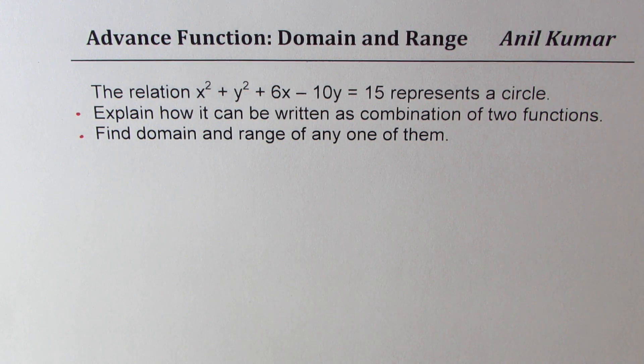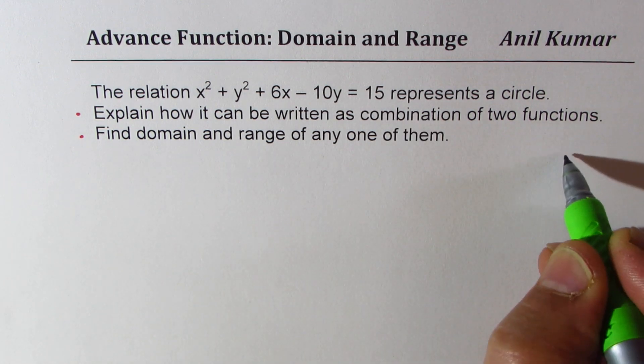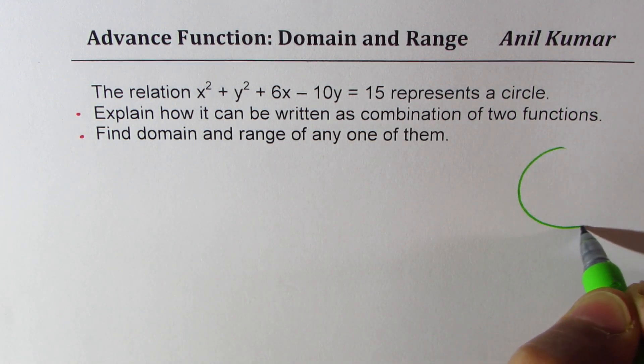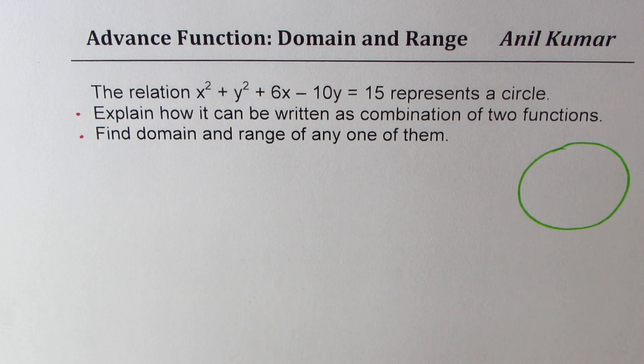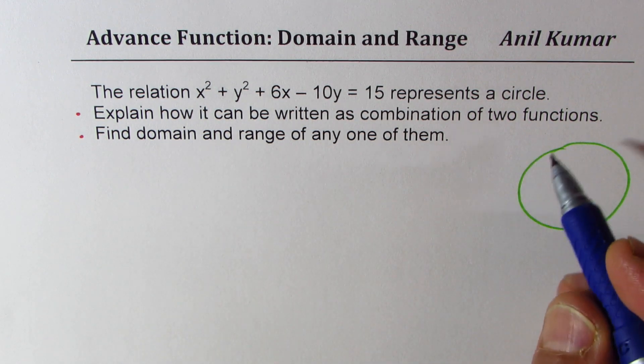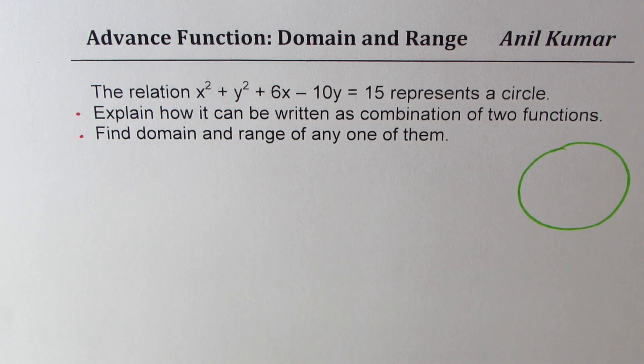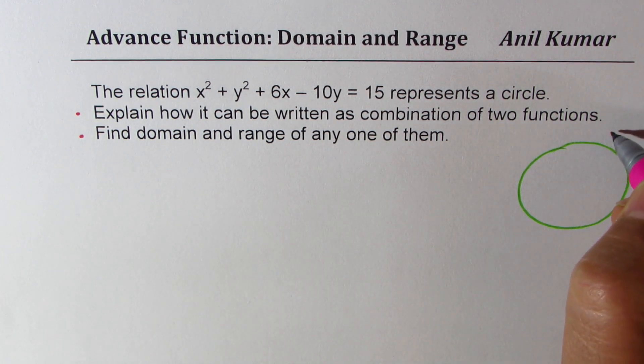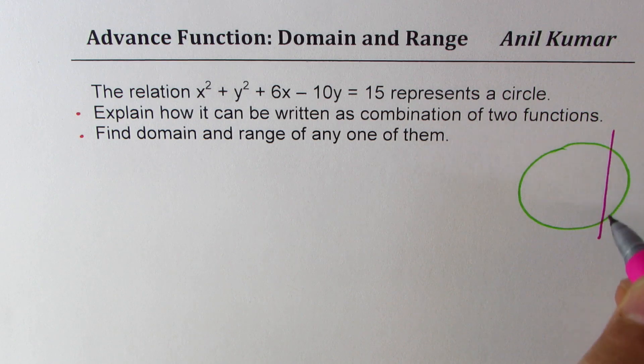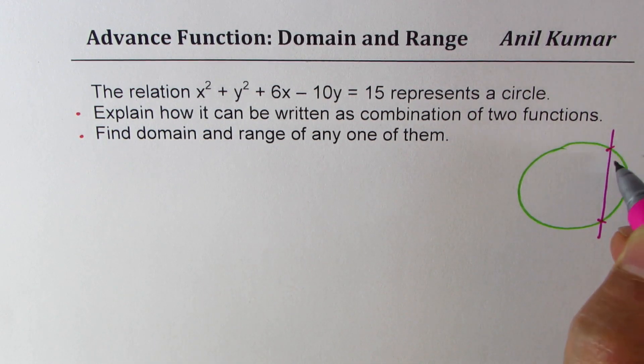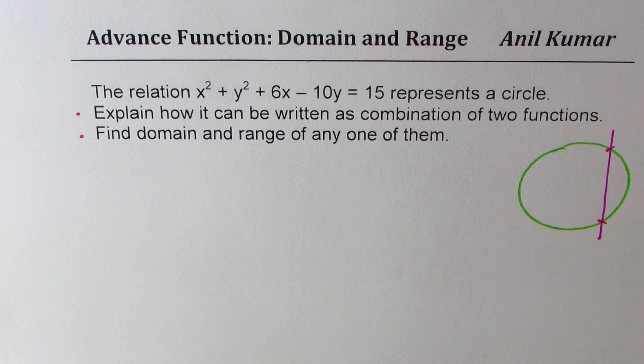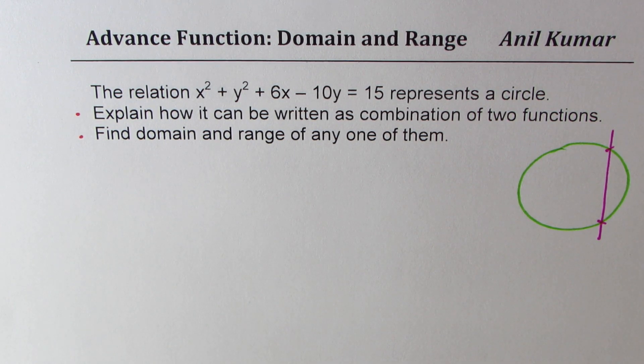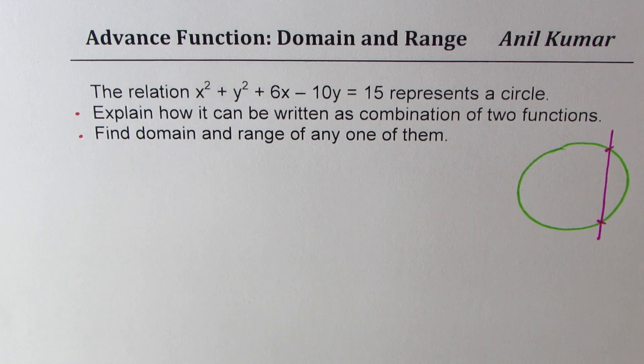So basically this equation gives you equation of a circle. Let's say that's the circle we are looking into. This circle fails the vertical line test and therefore it is not a function. So if I draw a vertical line, it fails. There are two points on this circle which has the same y value for a given x value.